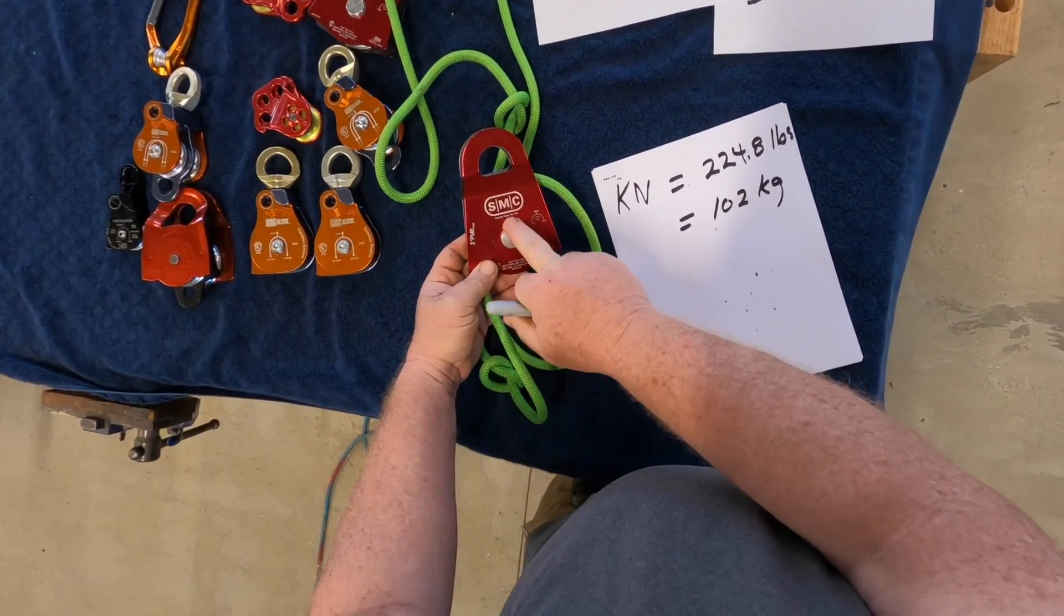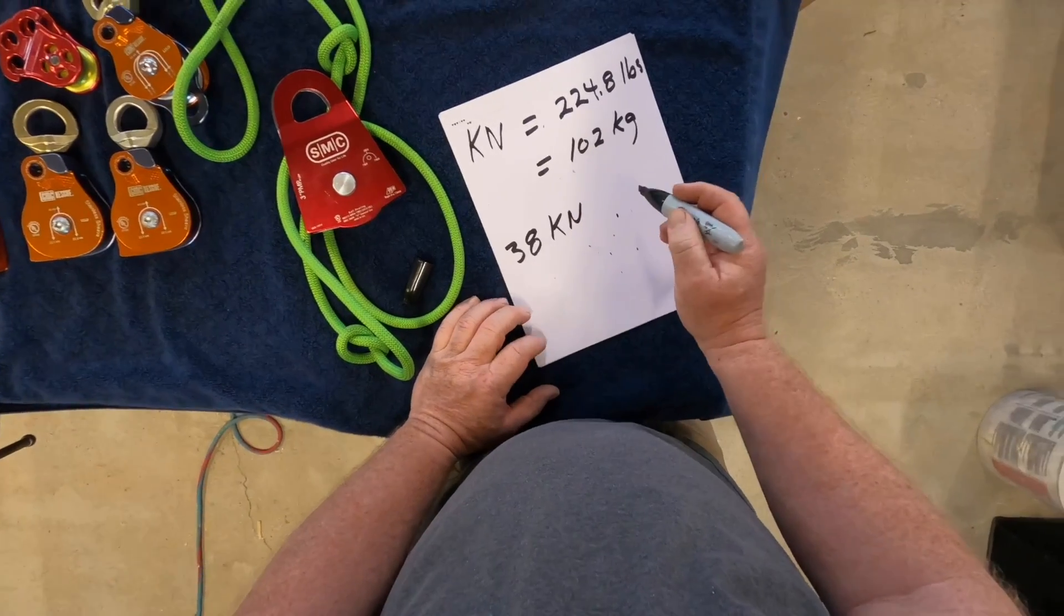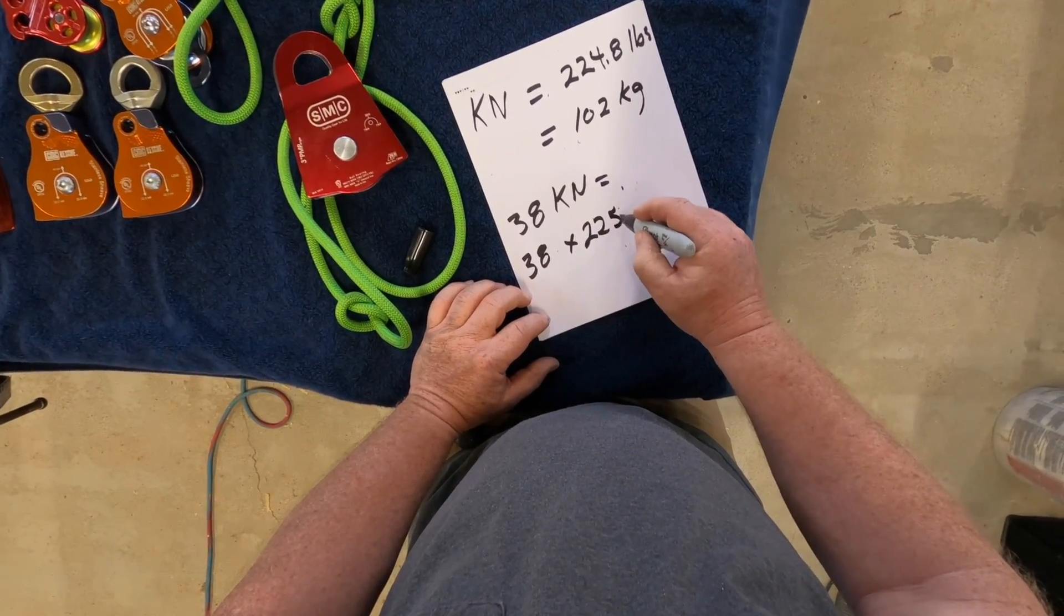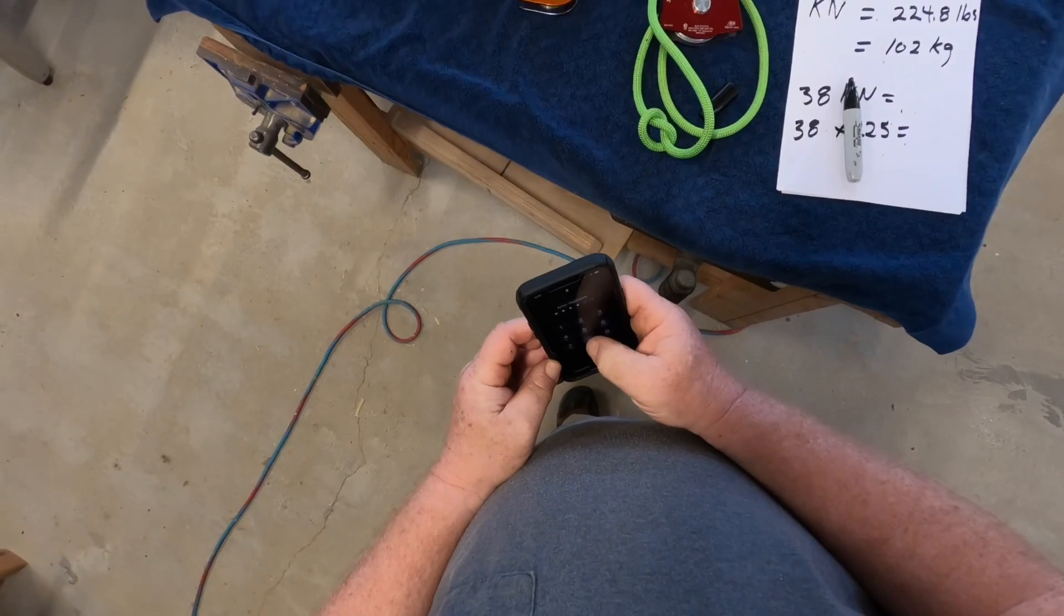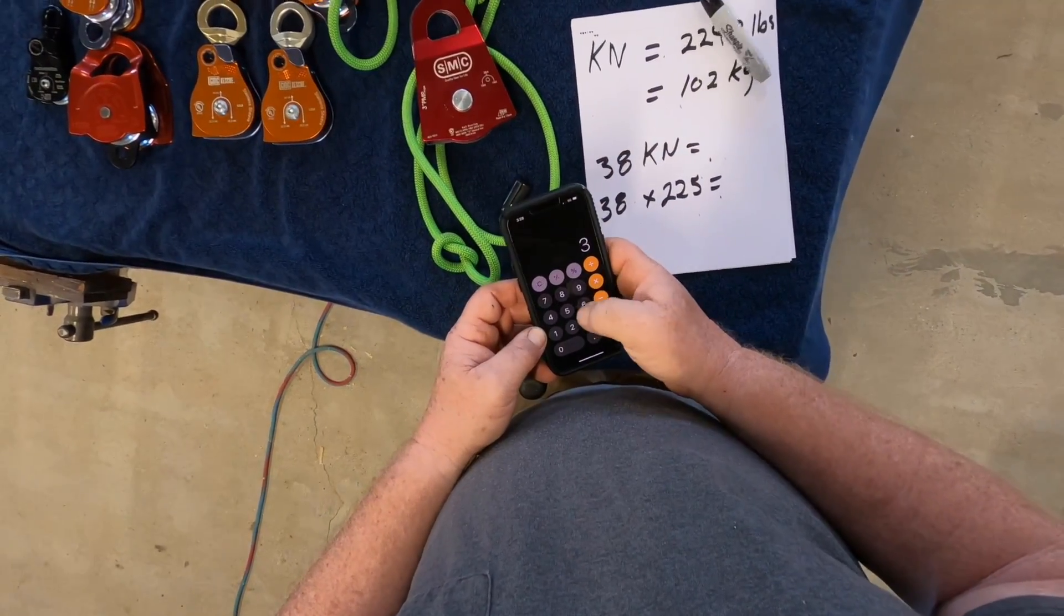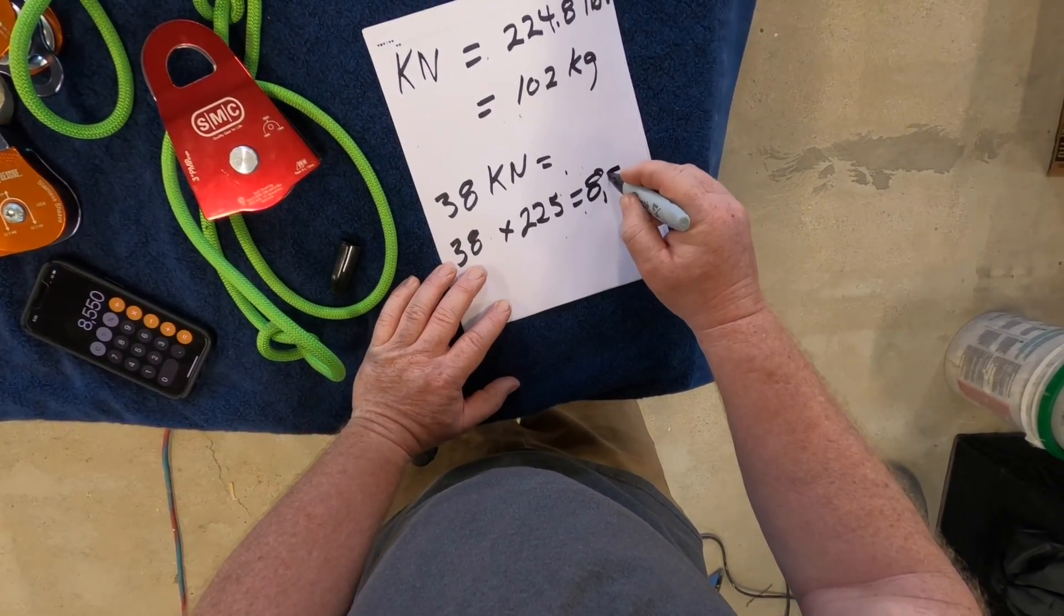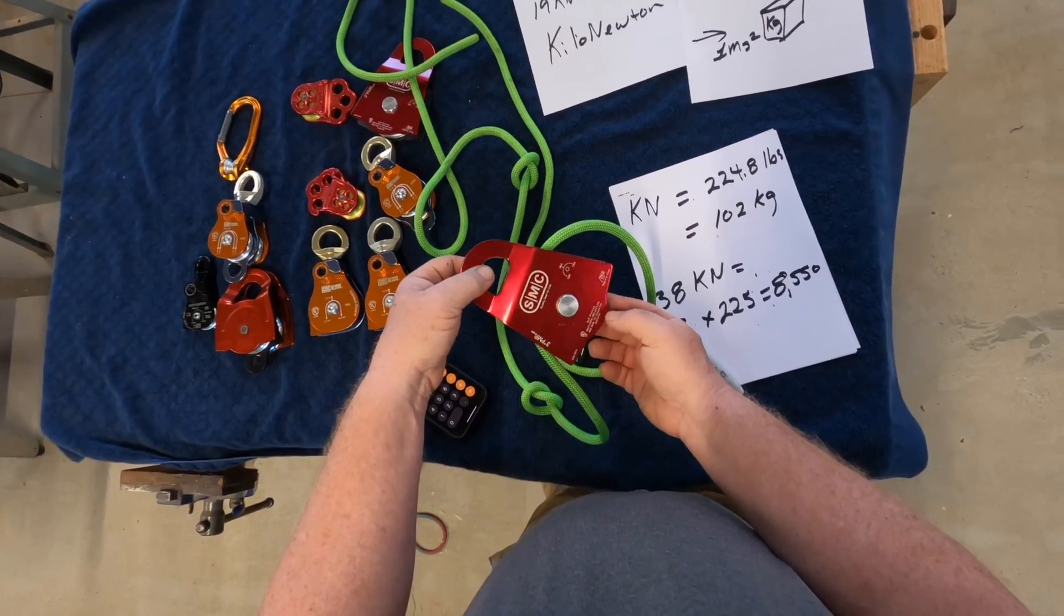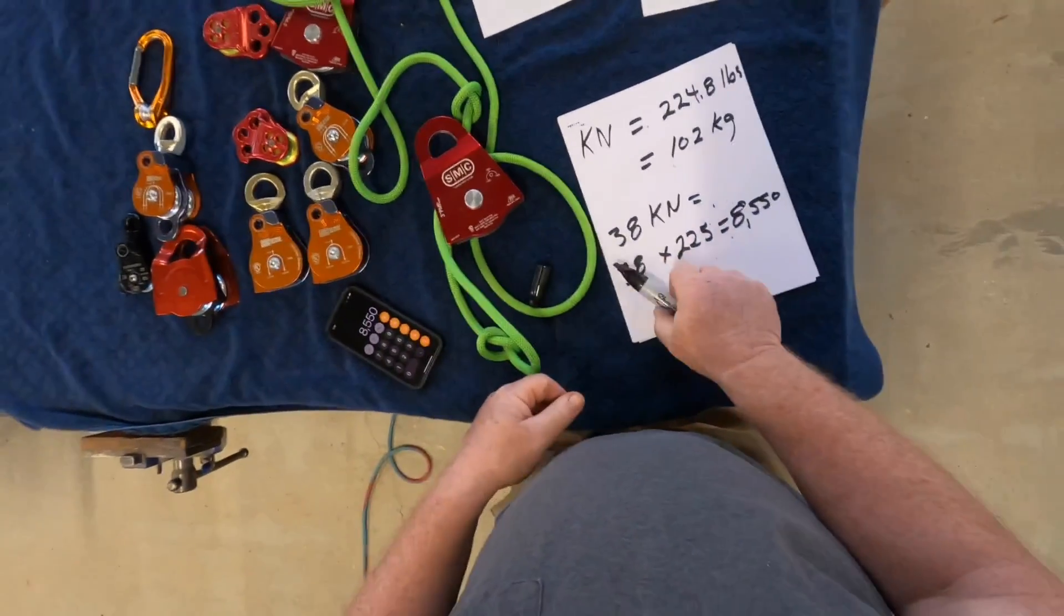So if I have this rating here, this is rated for 38 kilonewtons, which would be equal to 38 times, let's round it up, 225 pounds, and that is going to be your rating for this. So let's do some math real quick. 38 times 225, so it's 8,550 pounds. That's how strong this is. This can withstand over 8,000 pounds. Or 38 kilonewtons.